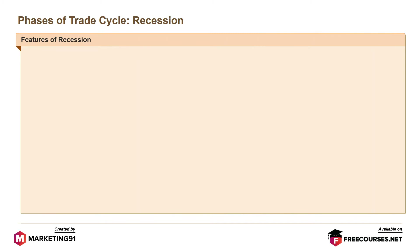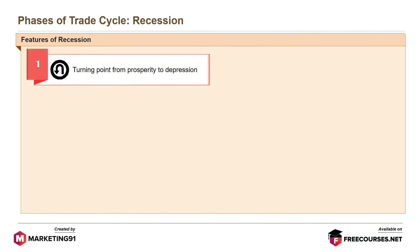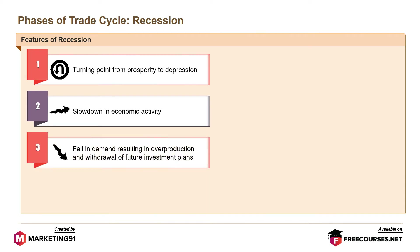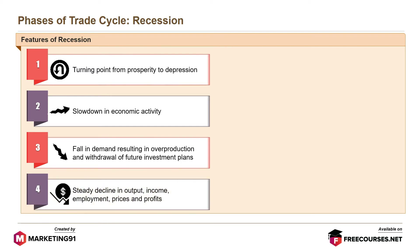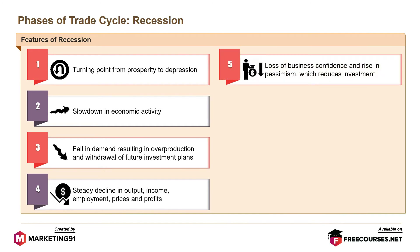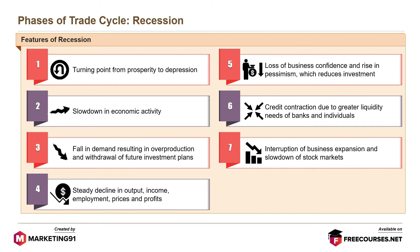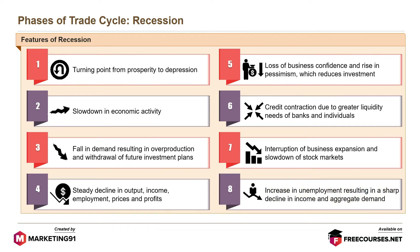Features of recession are: turning point from prosperity to depression; slowdown in economic activity; fall in demand resulting in overproduction and withdrawal of future investment plans; steady decline in output, income, employment, prices, and profits; loss of business confidence and rise in pessimism, which reduces investment; credit contraction due to greater liquidity needs of banks and individuals; interruption of business expansion and slowdown of stock markets; and increase in unemployment resulting in a sharp decline in income and aggregate demand.